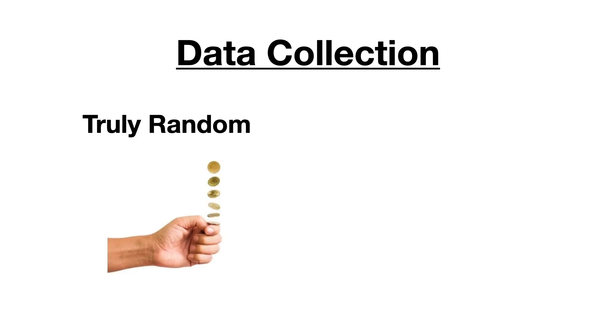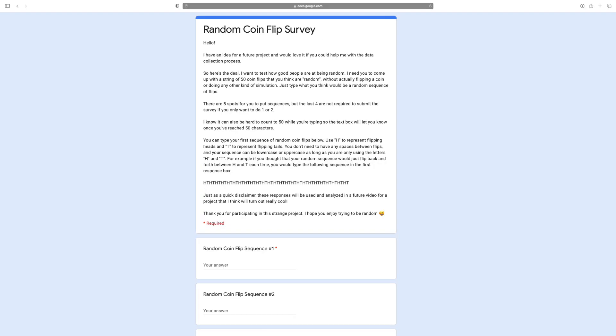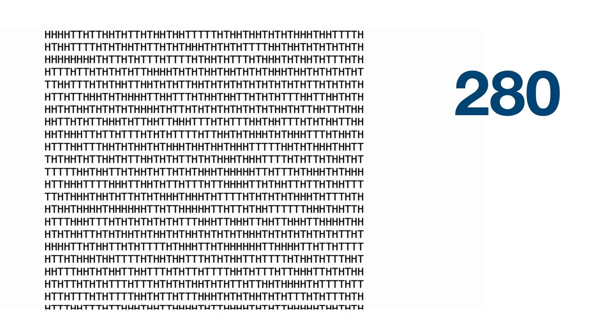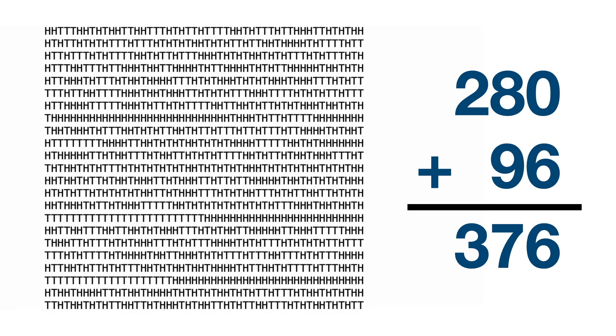So we figured out how to get the truly random sequences, but now we're going to need a way to get sequences that were created by actual people. A couple of months ago, I posted a link to this survey asking my subscribers to come up with sequences of 50 coin flips that they thought could pass as random. From this survey, I collected a total of 280 sequences that I'm trusting were made up by real people. I also made up some of my own sequences and collected some from friends, bringing the total count to 376.